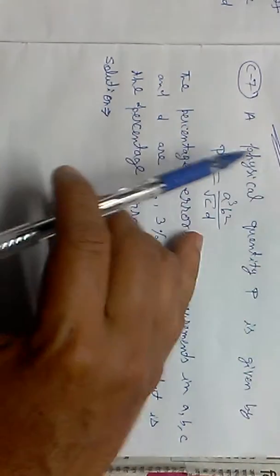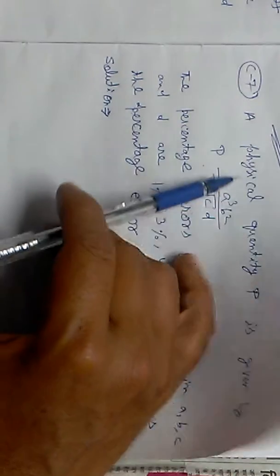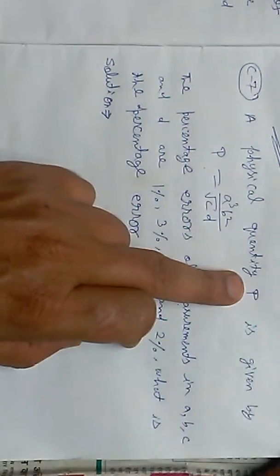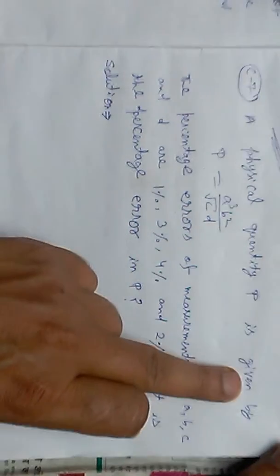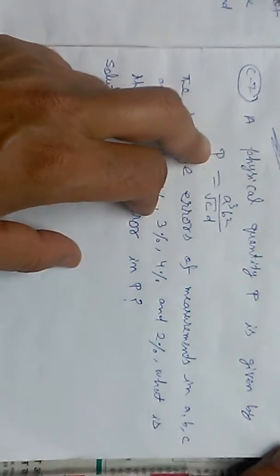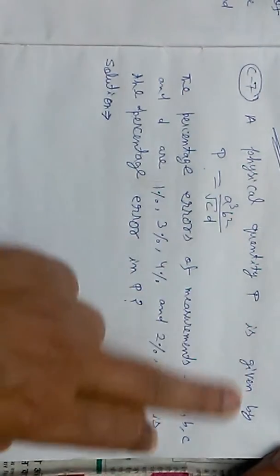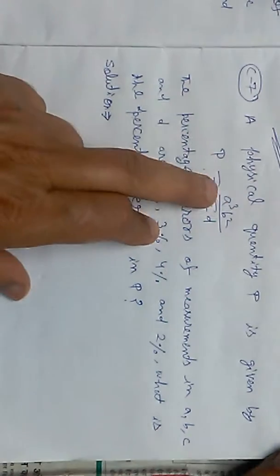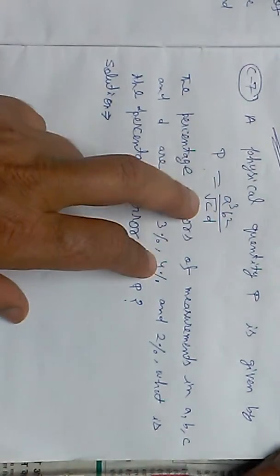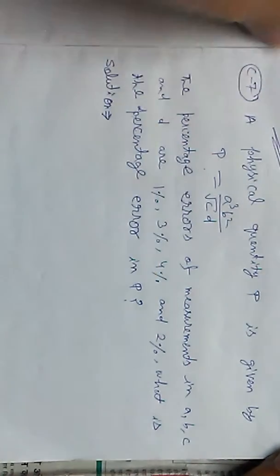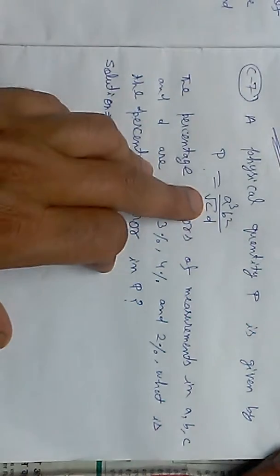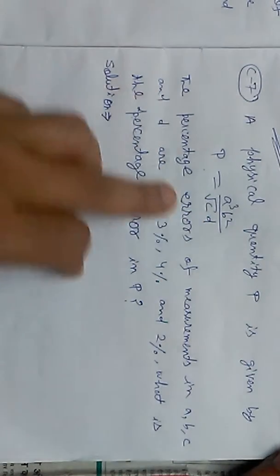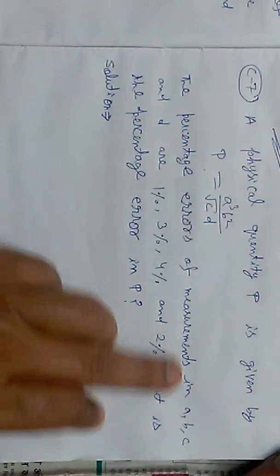Physics problem: A physical quantity P is given, where P is equal to a cubed times b squared upon square root of cd. We need to find the percentage error in measurement.